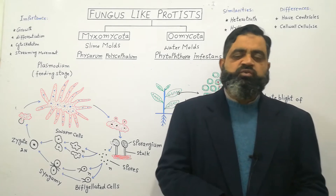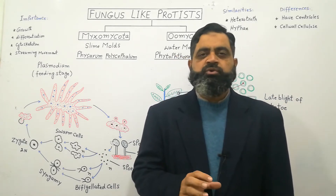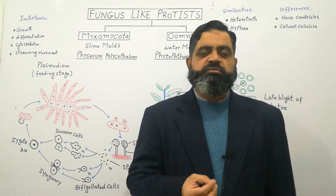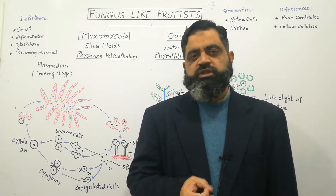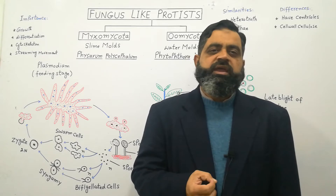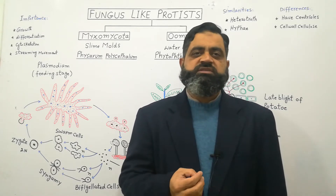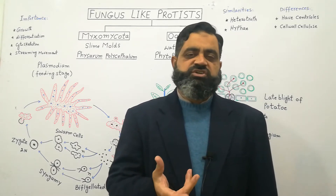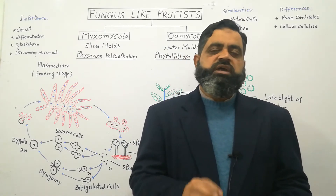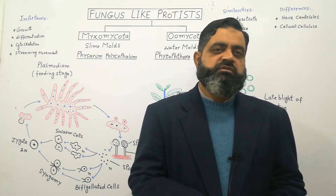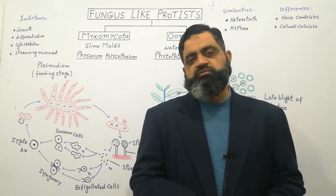Fungus-like protists were initially included in Kingdom Fungi due to their heterotrophic nature — they cannot synthesize their own food with the help of photosynthesis — and because they have a plant body made up of thread-like structures known as hyphae. Due to these two reasons, scientists initially grouped fungus-like protists into Kingdom Fungi.